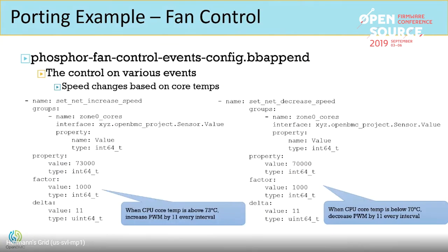Regarding the factor parameter: the property value is 70,000, and it needs to be divided by the factor to get 70 degrees. The interval is not shown in this example — it is defined in the YAML but not in this slide. The interval for fan speed control is roughly: increase every one second, decrease every three seconds.